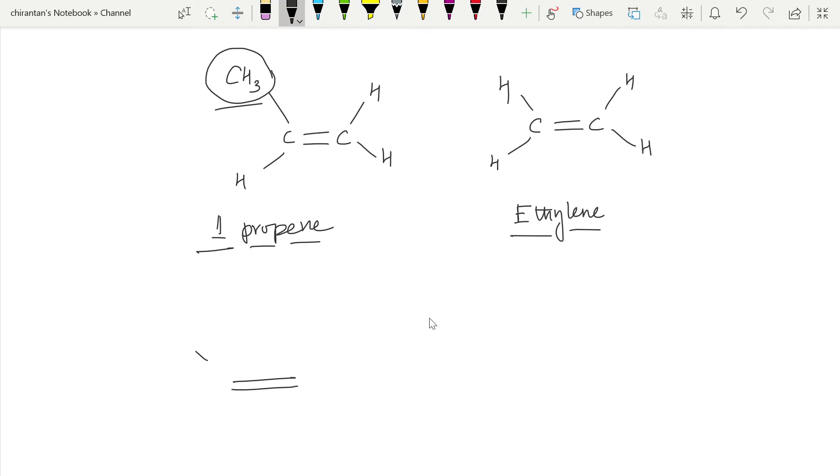...the sp3 hybridized orbital here. This is the CH bond, this is the bond below the plane, this one is above the plane. Here we have hydrogen, here we have another hydrogen, here we have another hydrogen, here is another hydrogen.